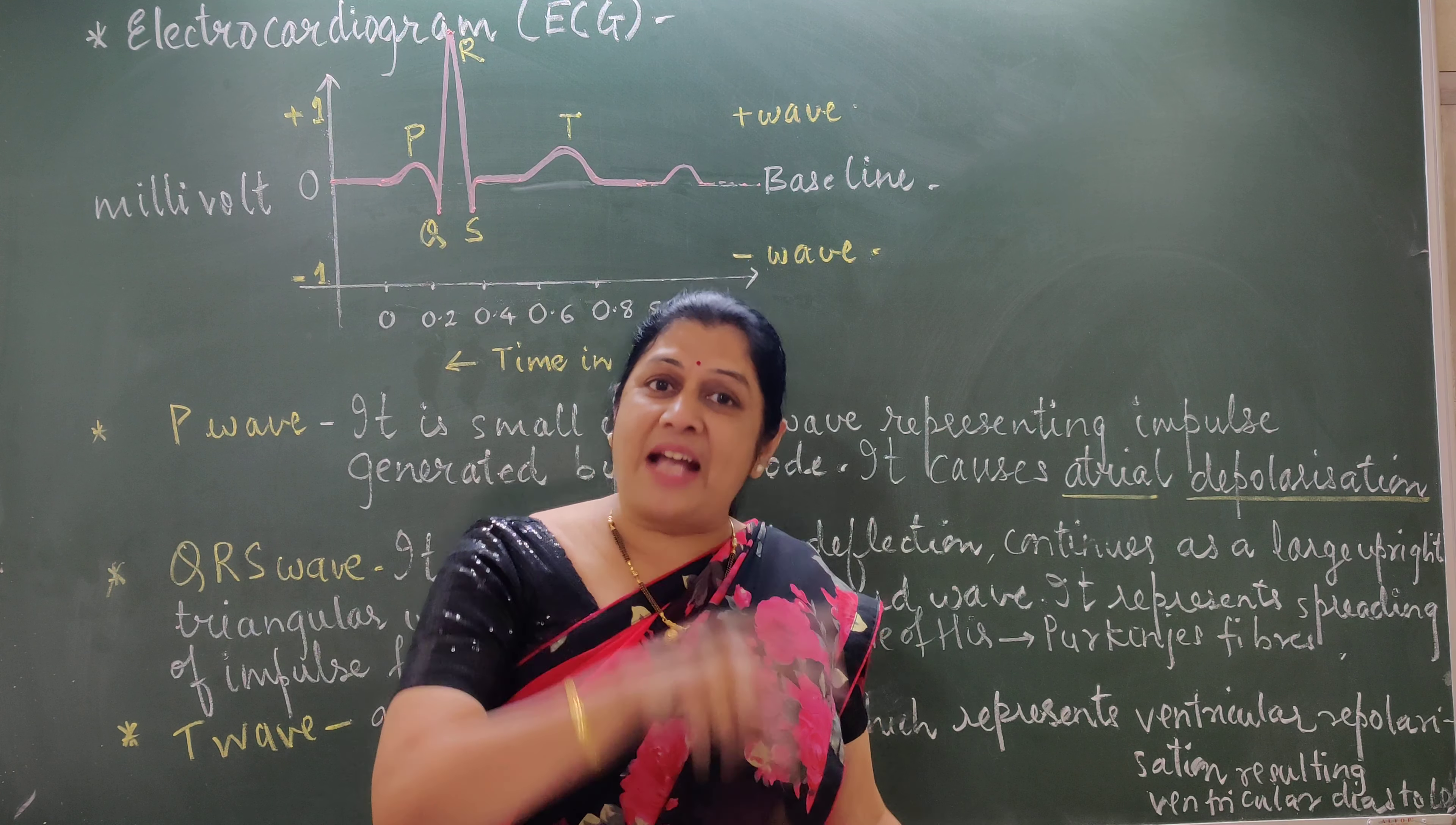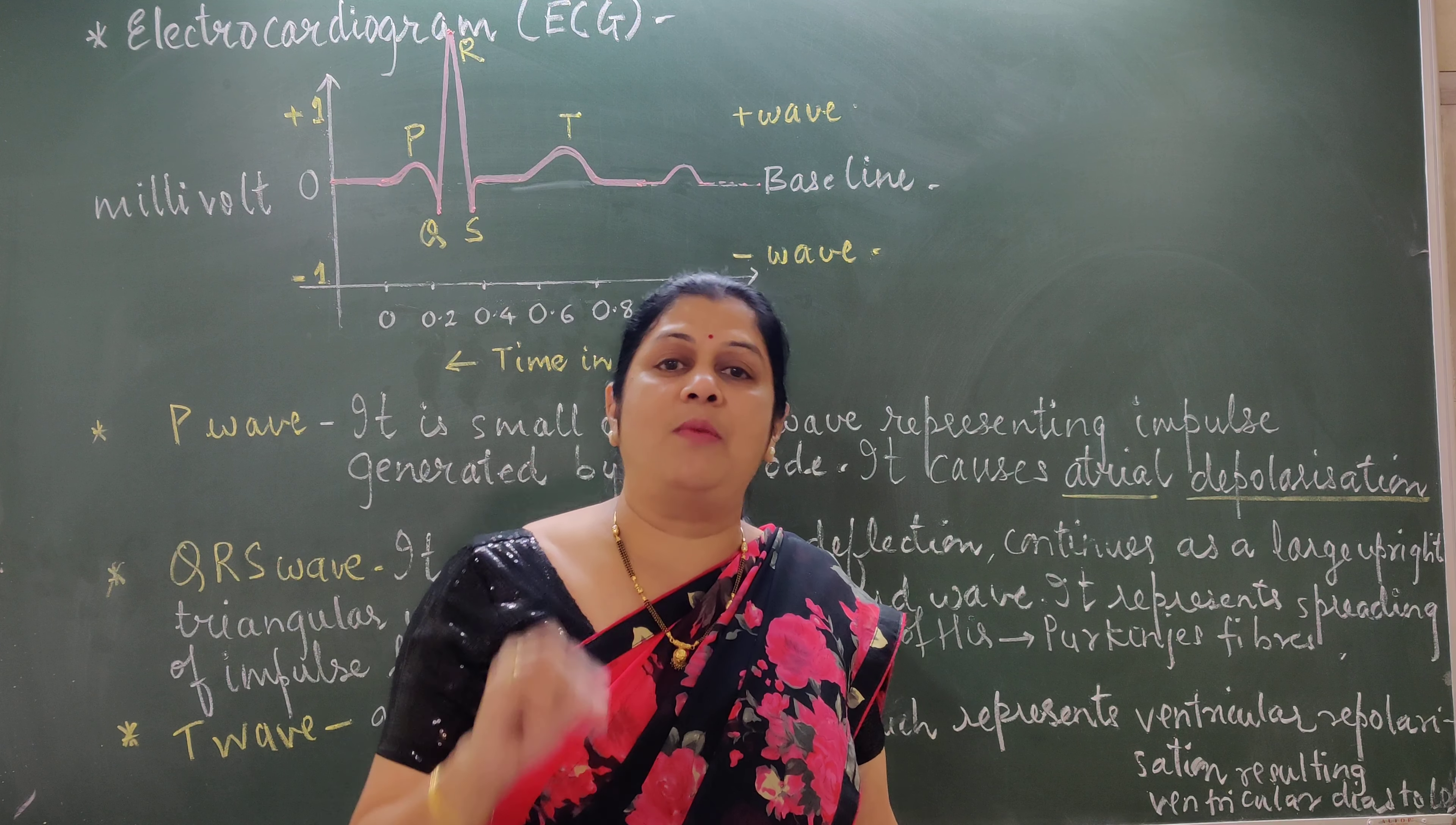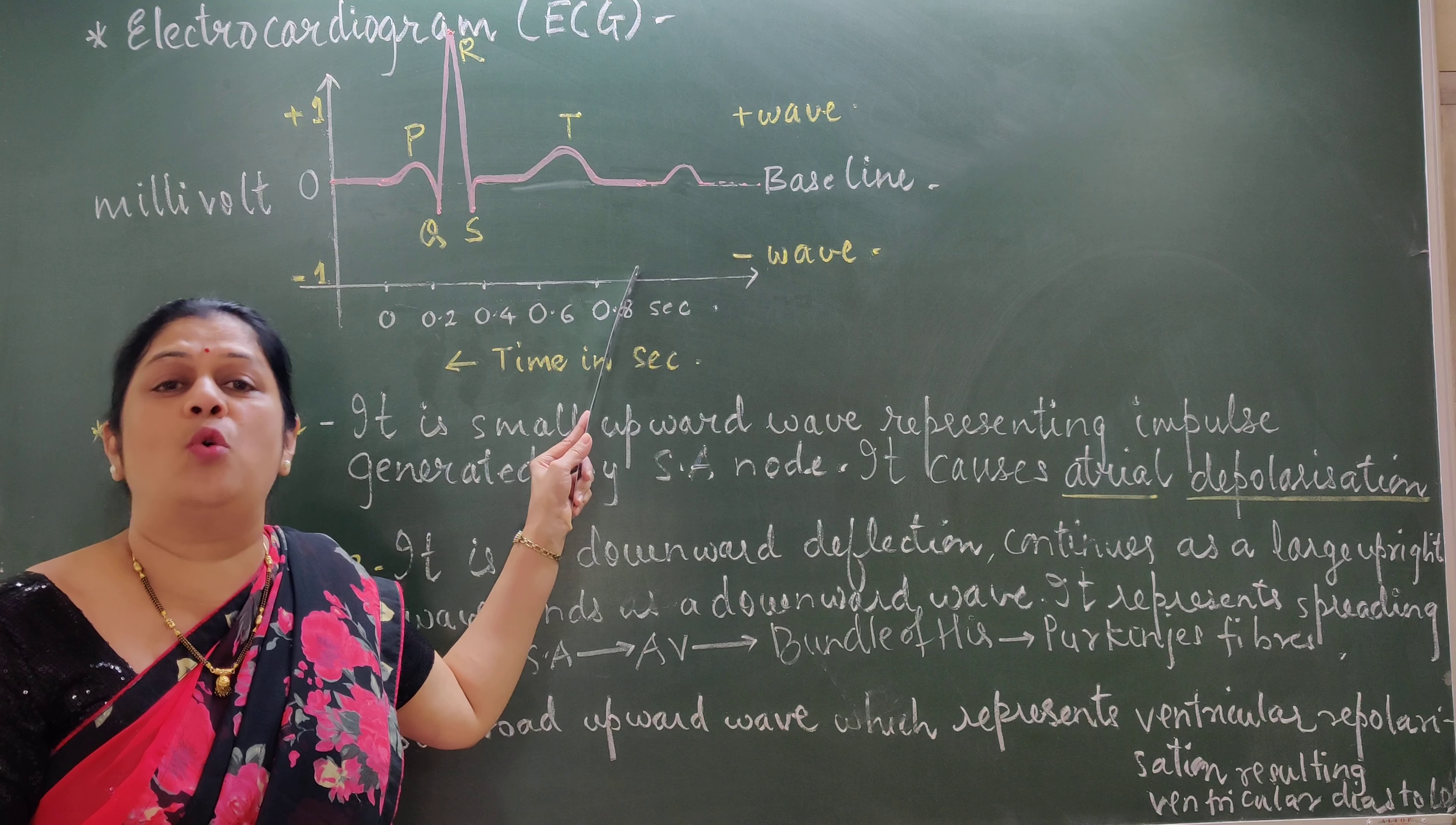Now, the bicuspid and tricuspid valves will get closed because it should prevent the backflow. And the blood which enters into the blood vessels will be transported. But now, the atria will get empty. So, those atria should get filled with the respective stream of blood. So, here it shows the normal ECG of a normal patient. If the patient consists of this normal ECG, the heart is functioning well. There are no abnormalities.